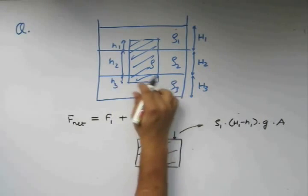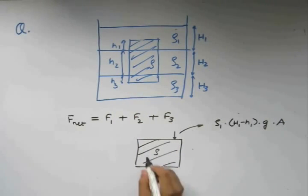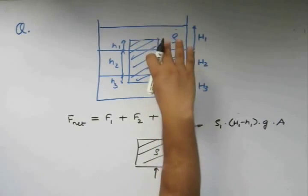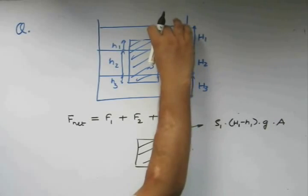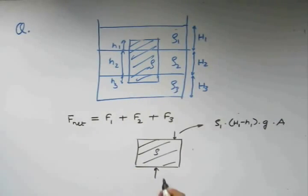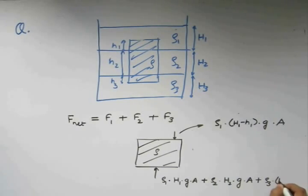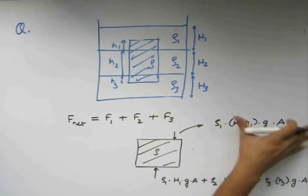The force on the bottom part of this body is going to be the pressure exerted by this liquid plus this liquid plus this height of rho3. So this is going to be rho1 times H1 into G times A plus rho2 into H2 into G times A plus rho3 into small h3 times G into A. This is in the upward direction and this is in the downward direction.